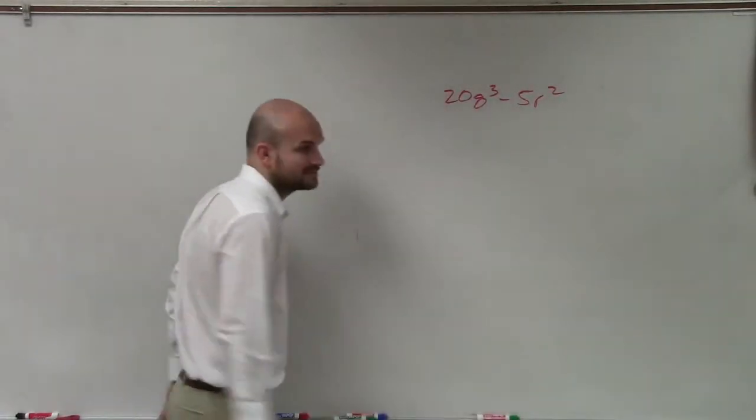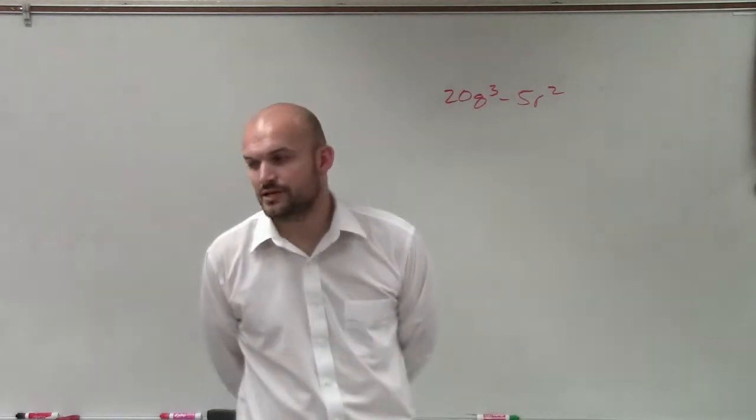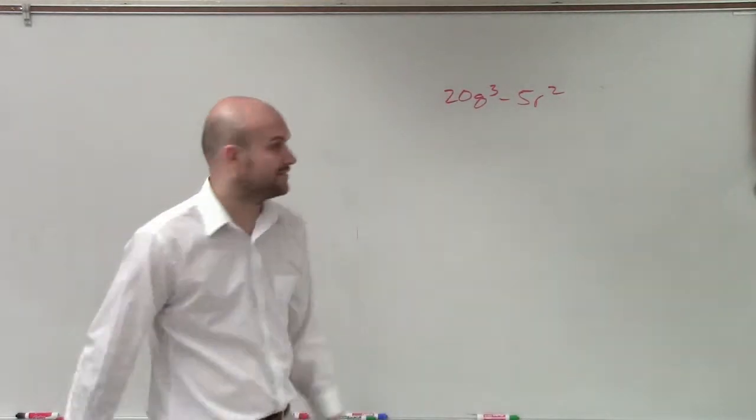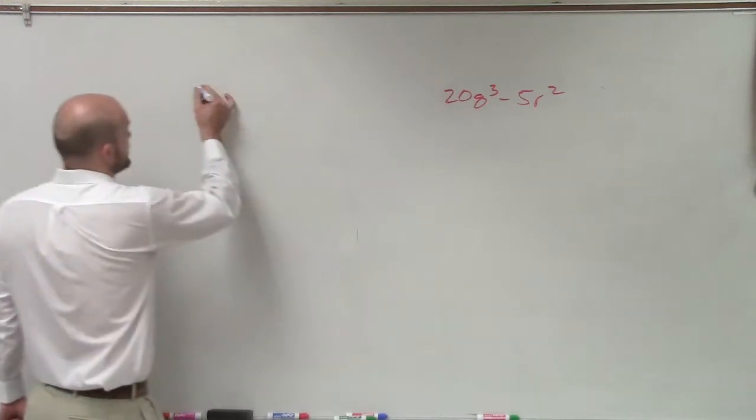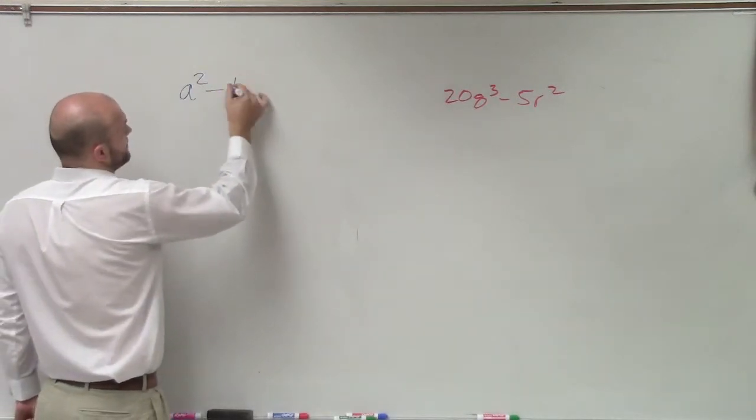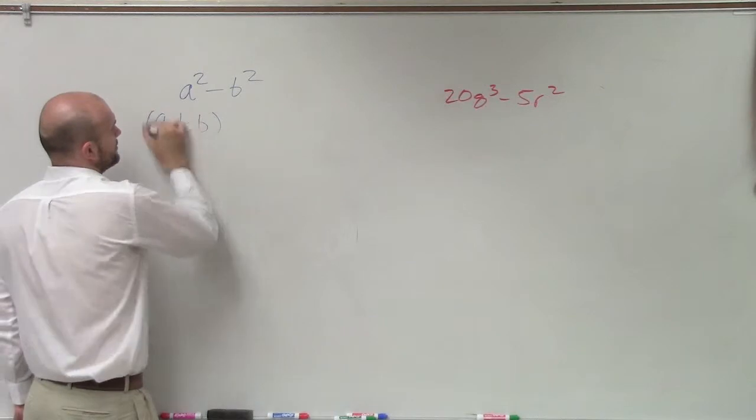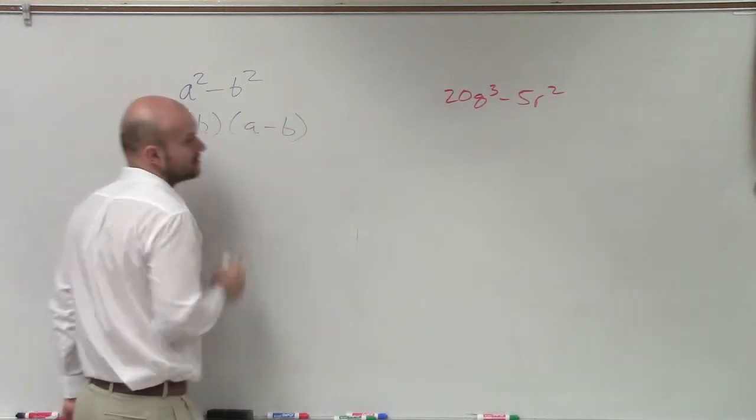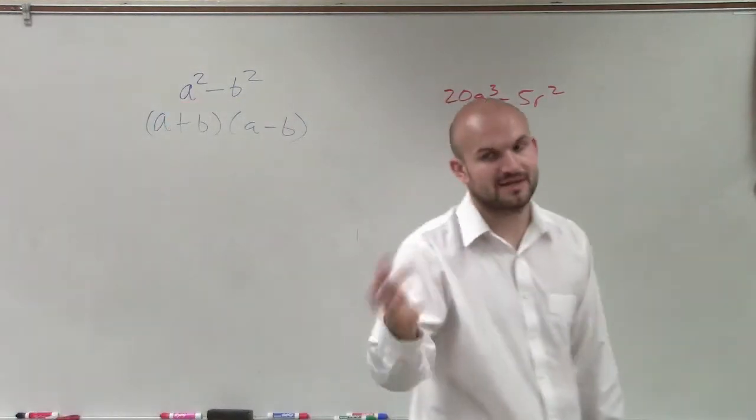So for this problem, we know that we can simplify by using difference of two squares as long as I have an equation that's in the form of a squared minus b squared. If it is, then I can factor it really, really quickly into a minus b, a plus b.